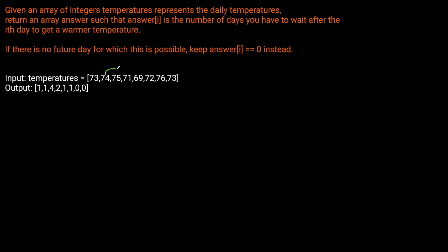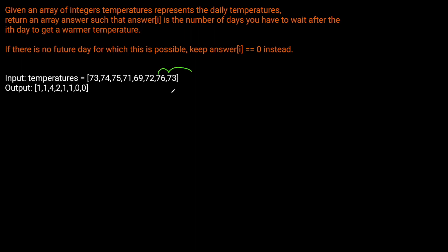Then 74 would have to wait one day to get to 75 for that warmer temperature. Then we're at 75 — how long until we get to the next warmer temperature? It's one day to 71, two days to 69, three days to 72, and then four days to 76. So that's where we get the four. For the 71, it takes one day to 69 and then one more day to 72, so that's two total. And the last element is zero because there's no element to the right of it, and 76 is zero because the array ends before we can find a temperature that's warmer.